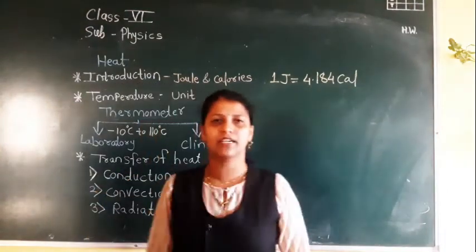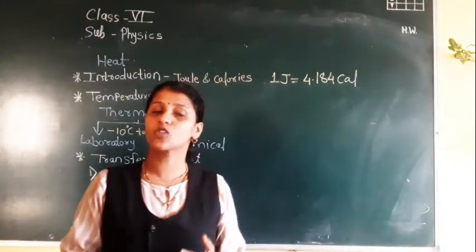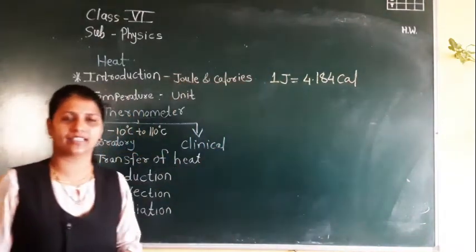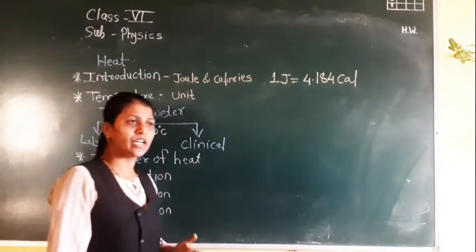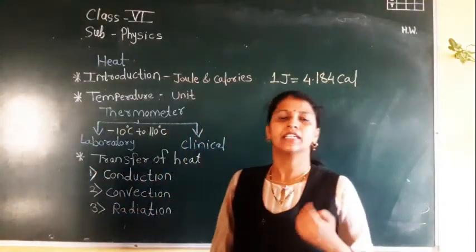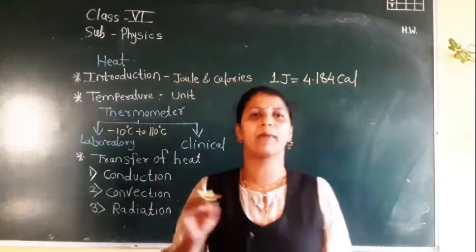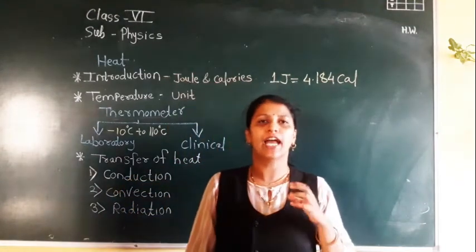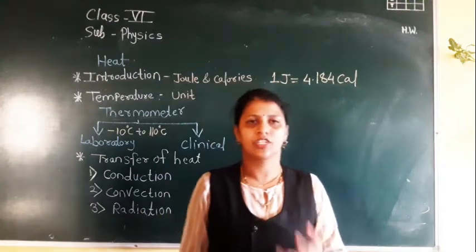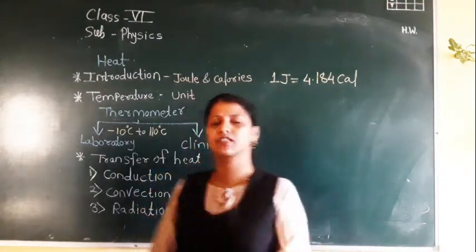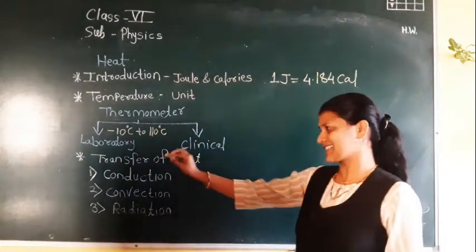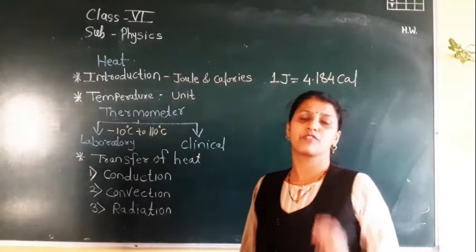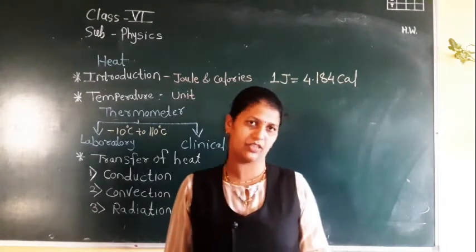The next thermometer is the clinical thermometer, also called the doctor's thermometer. The clinical thermometer has a small bending called a kink, which can hold the mercury level at a reading. This is a very important difference between the laboratory and clinical thermometer — the clinical thermometer has a kink which holds the mercury level.